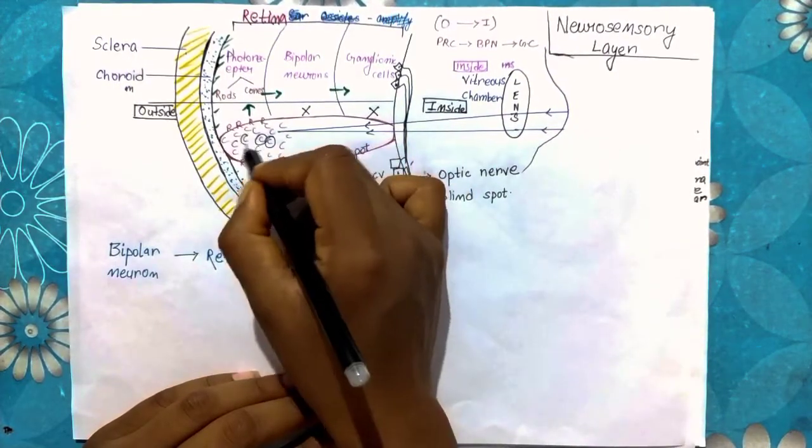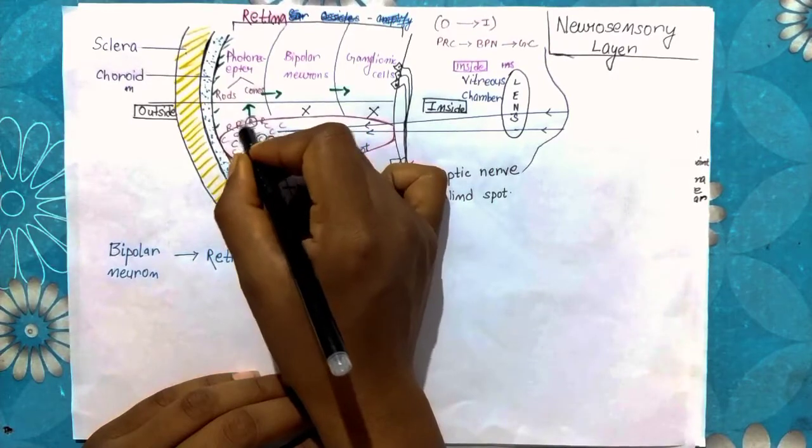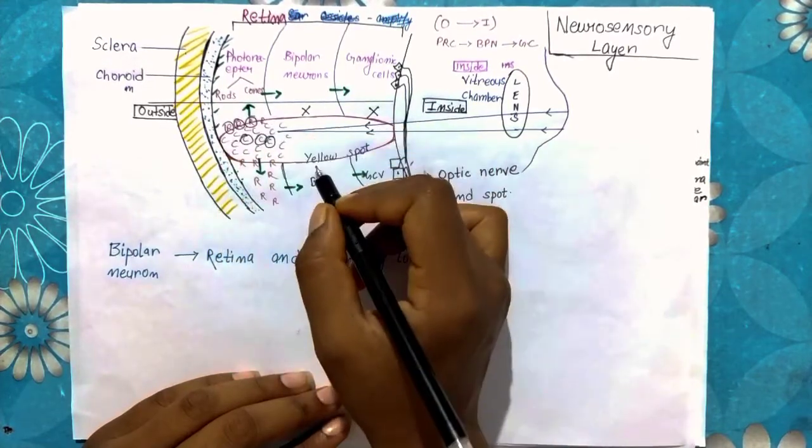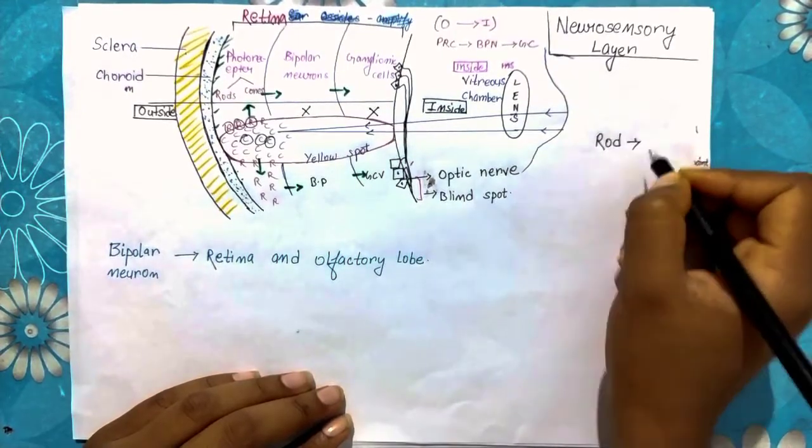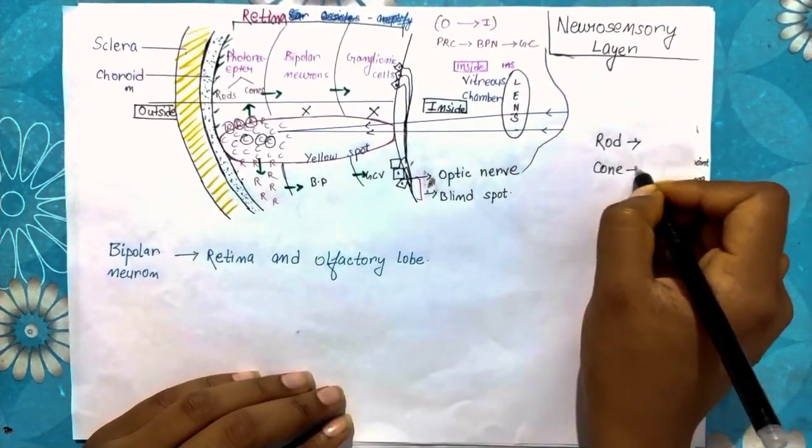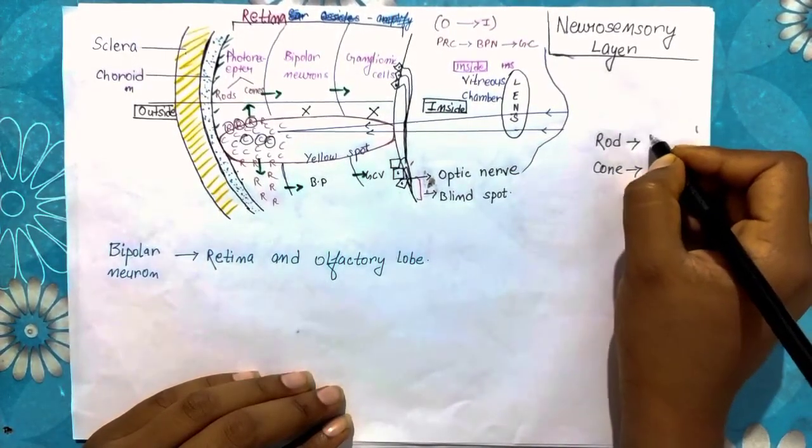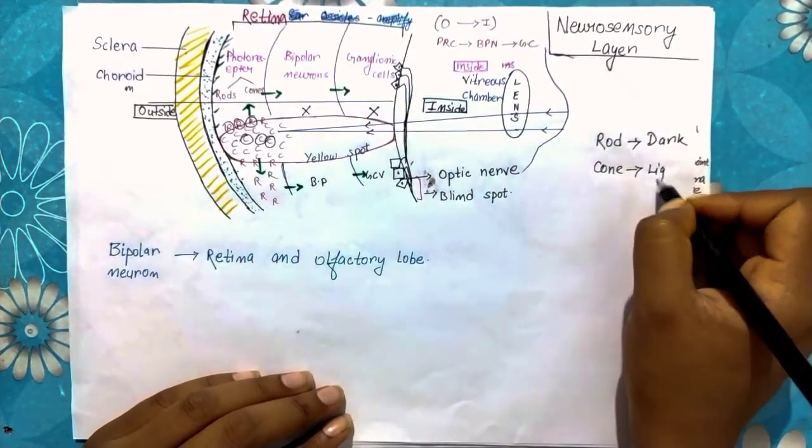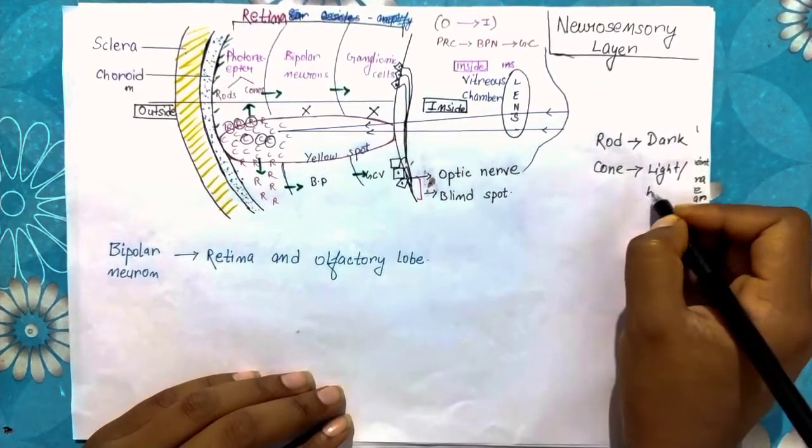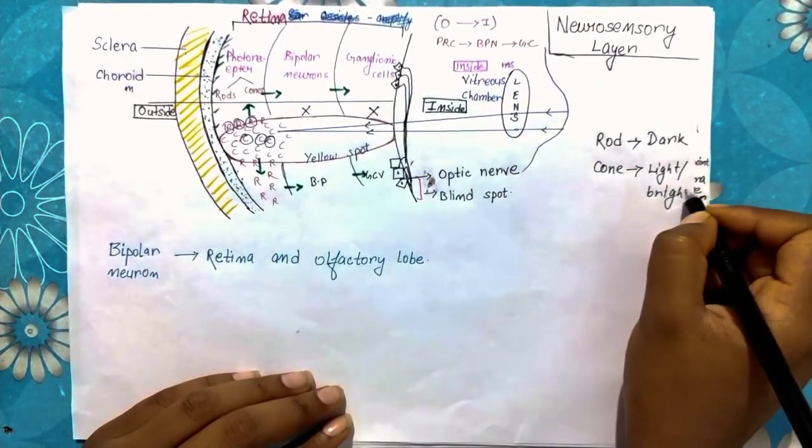And the periphery, which means the side or corner, has rod cells present. So the rod cells work in the dark and the cone cells work in the light, or we can say bright.